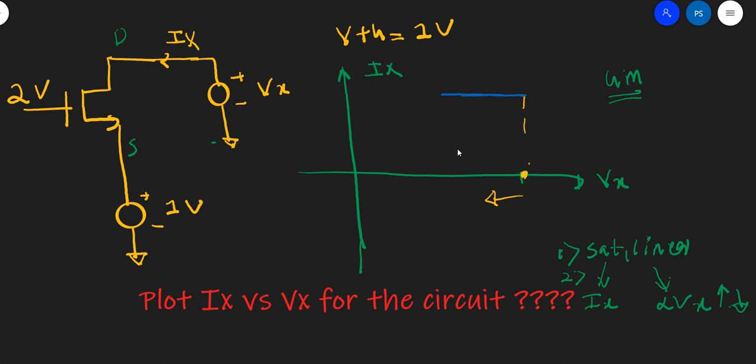Now what will happen is at one particular point when the Vx is less than the overdrive voltage, because Vth is given, we know what is that point. The point at which it is at the edge of saturation is when it is 1 volt, which is the overdrive voltage. So after 1 volt, if I reduce further, your MOSFET is now operating in linear.